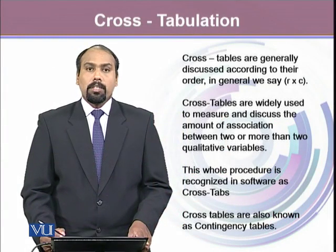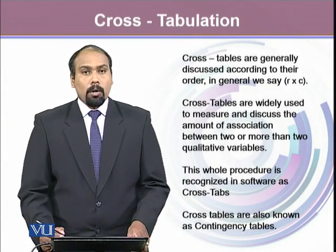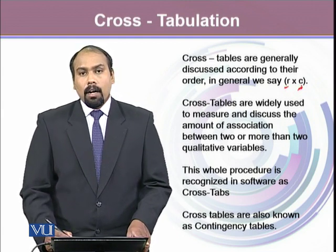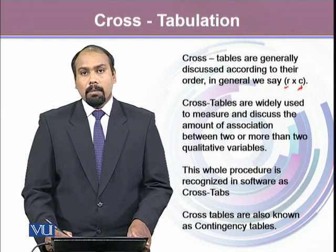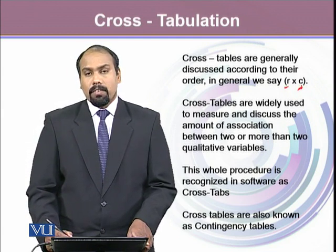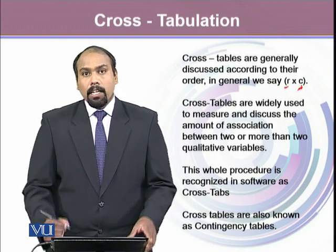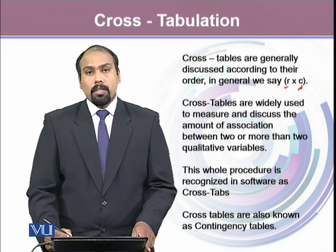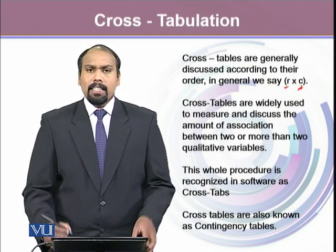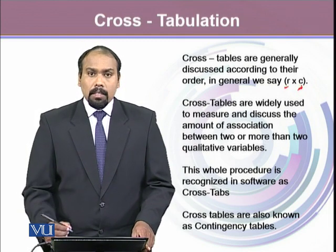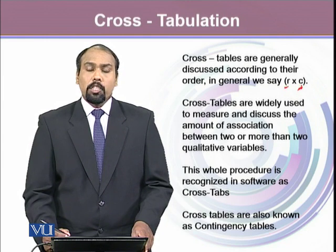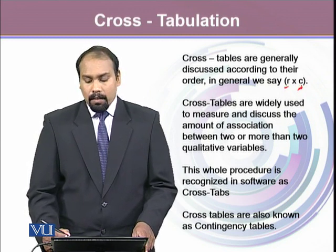Cross tables are generally discussed according to their order. In general, we say a cross table is of order R cross C, where R represents the number of rows and C represents the number of columns. R is the number of categories of the qualitative variable on the row side, and C is the number of categories on the column side. We talked about only two qualitative variables, but the order can change if we add a third variable. The table we discussed is called a 2×2 cross table, where we have two rows and two columns.